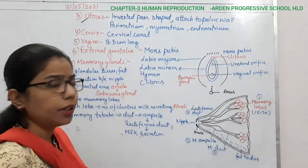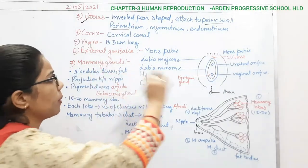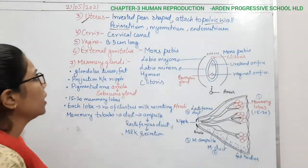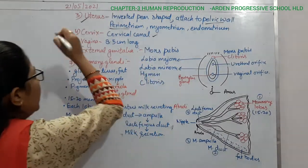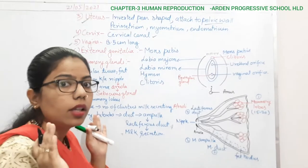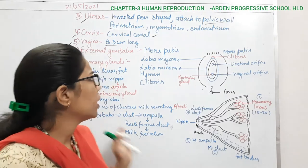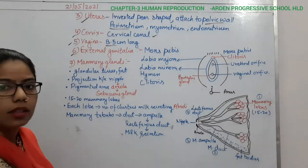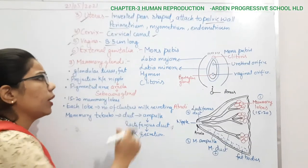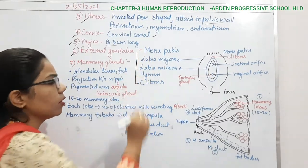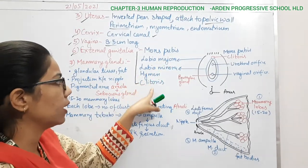The uterus is like an inverted pear shape and is attached to the pelvic wall. Its three layers — perimetrium, myometrium, and endometrium — have been completed. The vagina has a vaginal canal of 8.5 centimeter length. Now comes the sixth part — the external genitalia — which includes mons pubis, labia majora, labia minora, hymen, and clitoris.